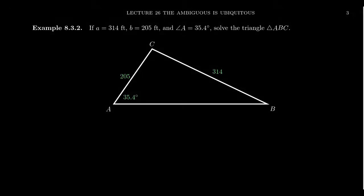In this video, we're going to solve the triangle ABC, given the data that little a equals 314 feet, which is approximately 100π, little b equals 205 feet, and angle A is 35.4 degrees.